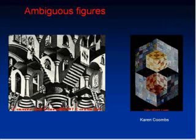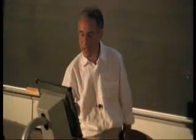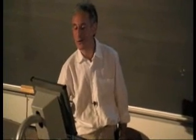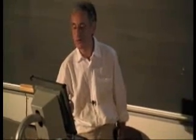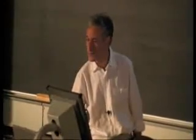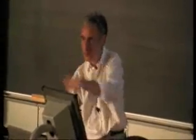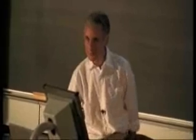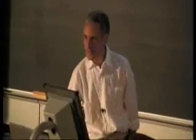Here, in another Escher drawing, instead of impossibility we have ambiguity — the kind of ambiguity which, at its simplest form, is seen in what's called the Necker cube. These cubes can pop in and out. Are they popping in and out for you? Sometimes it takes a while. Does this one look convex, sticking out towards you? Or does it look like it's sticking in, away from you?